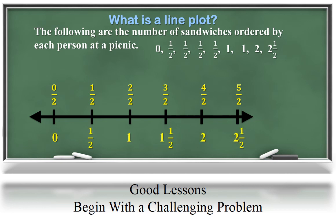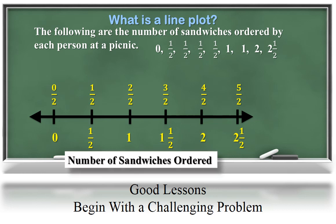So it might make more sense to convert these fractions greater than 1 to mixed numbers, which would make more sense in the context of this problem. And of course, we need a label to show what those numbers represent on our number line. These numbers are showing the number of sandwiches ordered by people at the picnic.